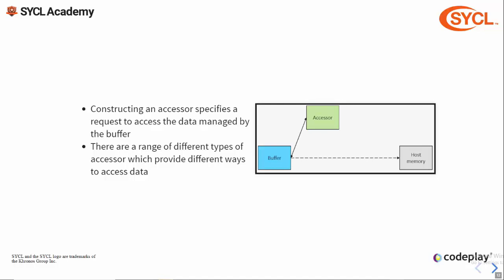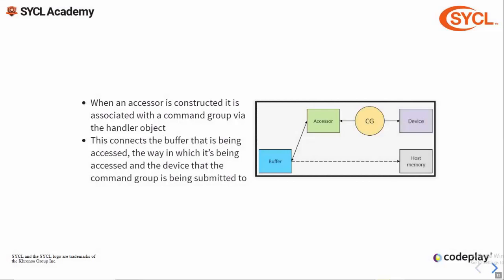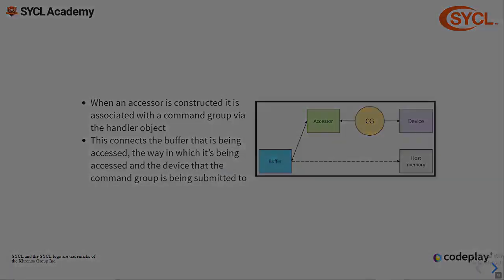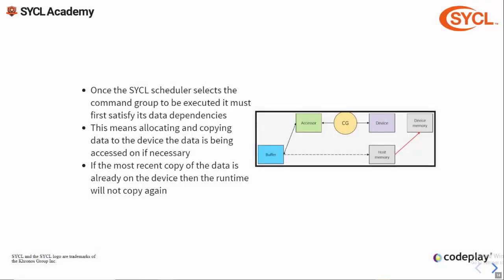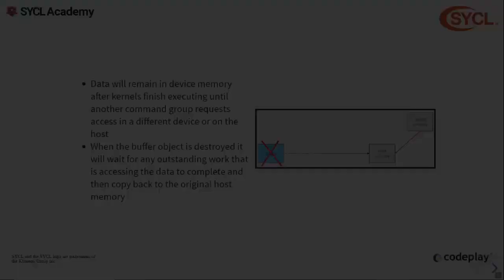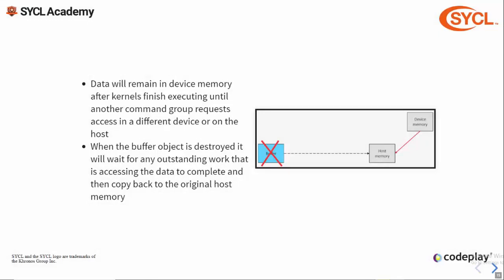This is done by constructing an accessor to that buffer. When an accessor is constructed, it is registered with a command group via the handler object, connecting the buffer being accessed to the way and location in which it's being accessed. With this information the runtime can schedule the command group in relation to others. Once selected, the runtime must first satisfy data dependencies, usually by copying data to the target device — though if the latest modified copy is already there it doesn't need to move. Sometimes dependencies are on data being written by another kernel, in which case it must wait for that kernel to complete. Data will remain on a device even after the kernel completes until it's requested elsewhere.